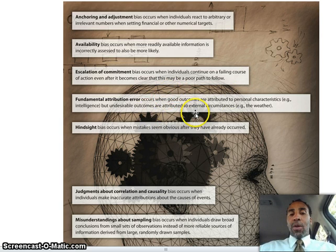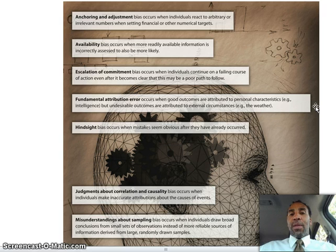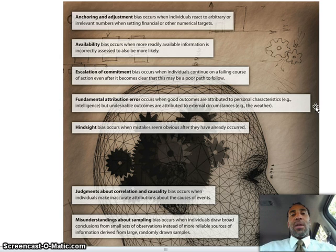Fundamental attribution error occurs when good outcomes are attributed to personal characteristics, but undesirable outcomes are attributed to external circumstances. For example: we have a great sales month — 'I'm just the greatest salesperson ever.' Then we have a bad month — 'the market is just crazy and nobody wants to buy.' Well, if I was a good salesperson last month, then the variables out there were probably the same this month too.